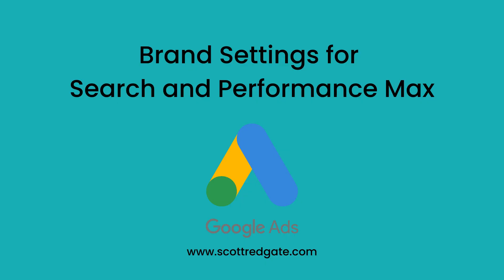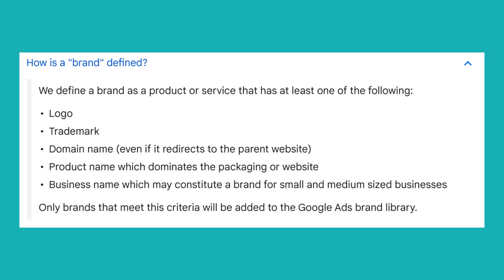Let's talk about the new brand settings inside of Google Ads for search and performance max. Before we do that, let's define what a brand is according to Google. They say: we define a brand as a product or service that has at least one of the following — a logo, trademark, domain name, product name which dominates the packaging or website, or a business name, which may constitute a brand for small and medium-sized businesses.